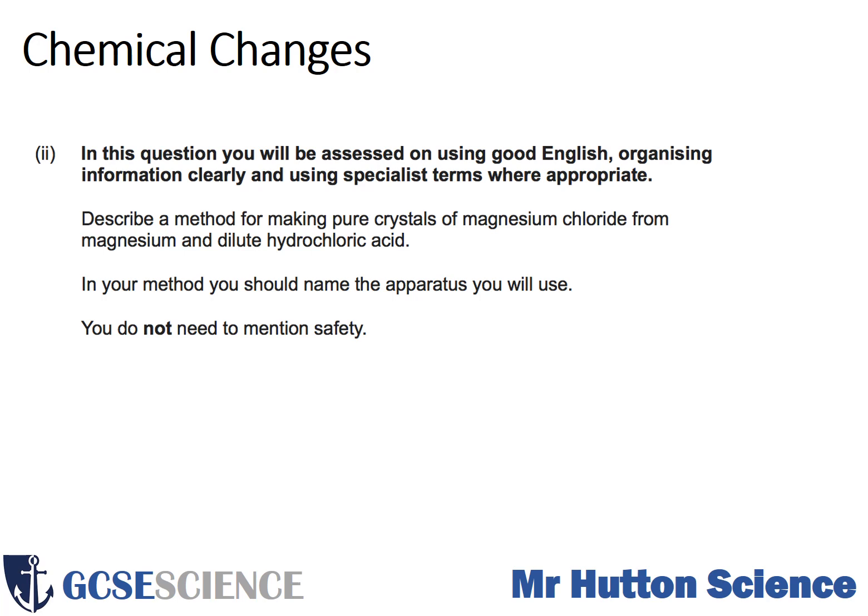Things you need to look out for: it wants you to make magnesium chloride, and it even tells you to use magnesium and dilute hydrochloric acid. It also mentions that you should name the apparatus, so every time you name the apparatus, you need to say what you're doing with it and why. Really think about telling the examiner what you're going to do step by step and why you're doing each step.